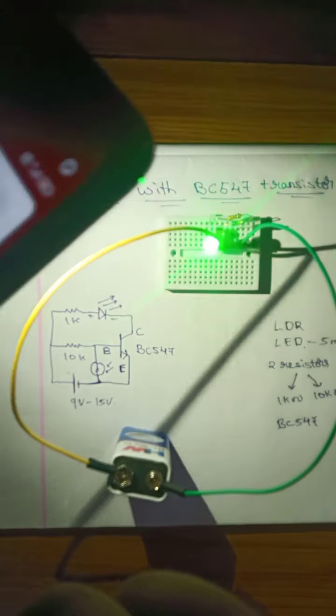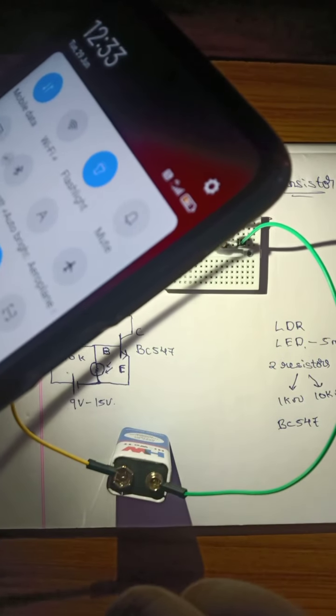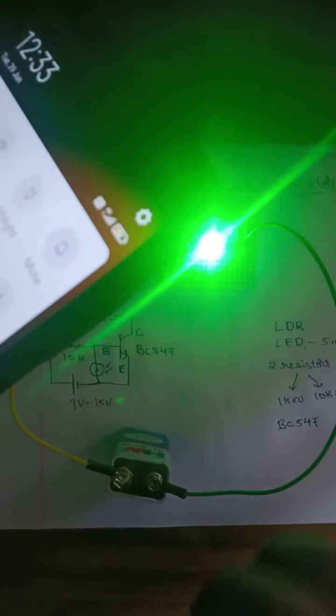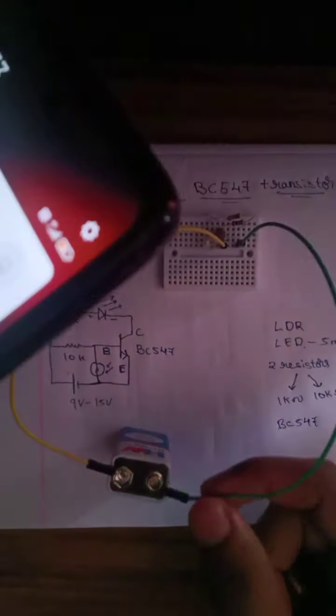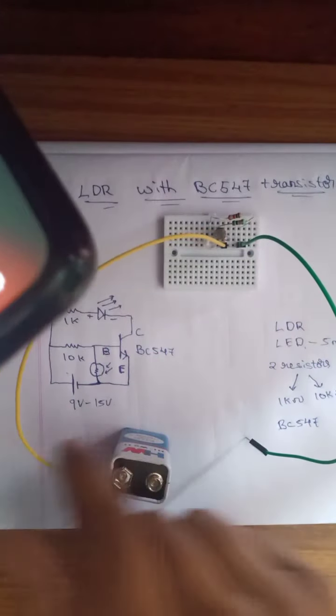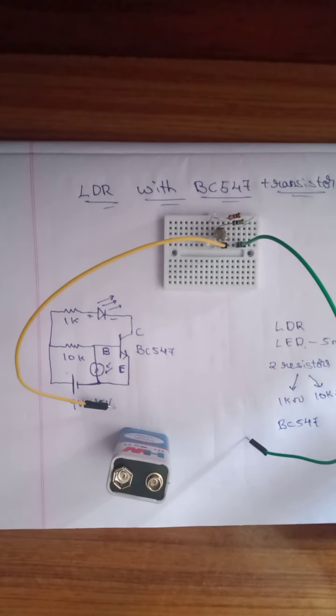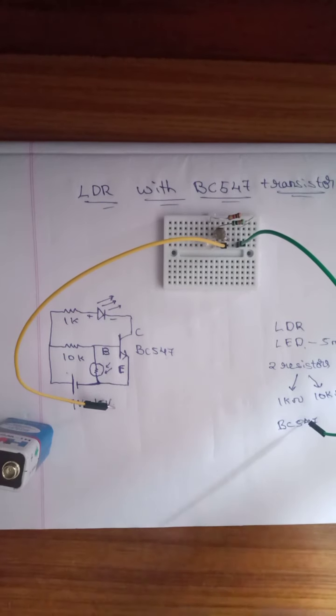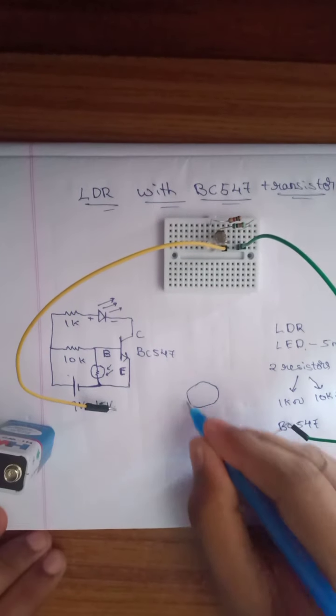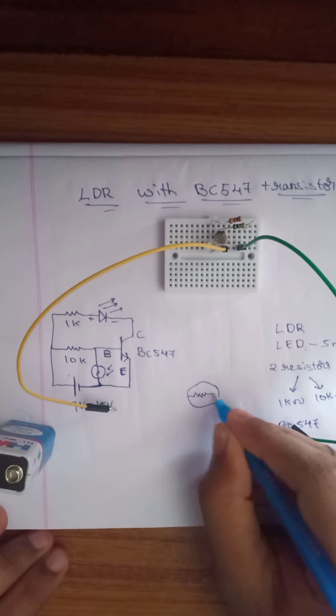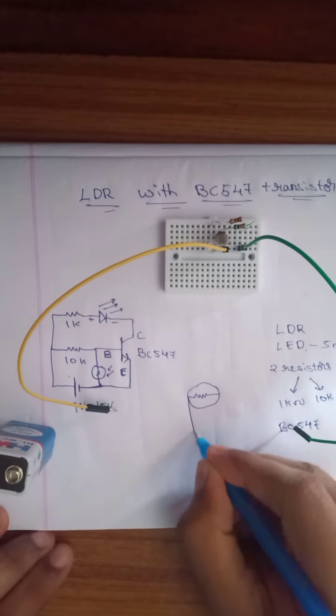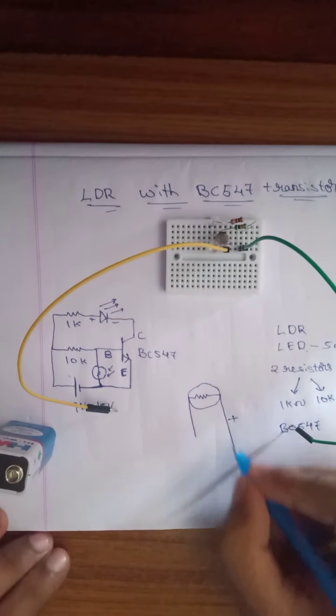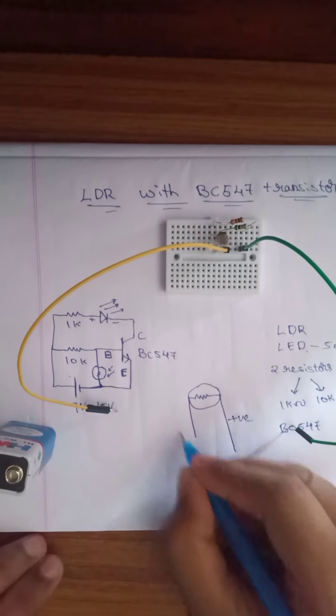Slowly the LDR increases, the light intensity increases. Let me take this out and explain you. Suppose we think that this is LDR. LDR is nothing but light dependent resistor. The largest pole is the positive pole and negative pole.